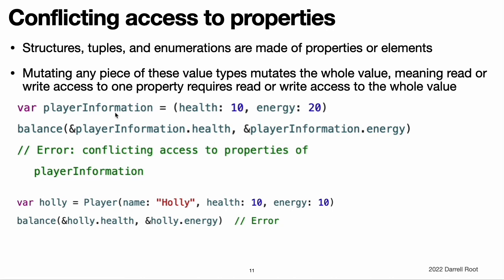In this example, calling balance on the elements of a tuple produces a conflict because there are overlapping write accesses to playerInformation. Both playerInformation.health and playerInformation.energy are passed as in-out parameters, which means balance needs write access to them for the duration of the function call. In both cases, a write access to the tuple element requires a write access to the entire tuple. This means there are two write accesses to playerInformation with durations that overlap, causing a conflict.